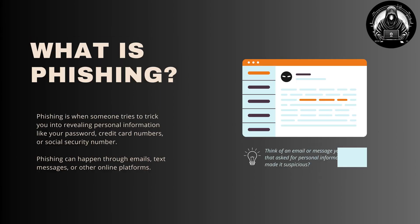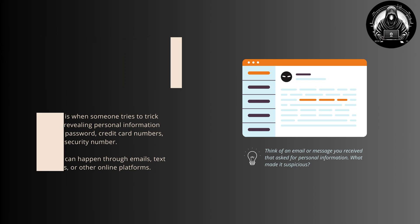What is phishing? Phishing is when someone tries to trick you into revealing personal information like your password, credit card numbers, or other sensitive information. Phishing can happen through emails, text messages, or other online platforms.